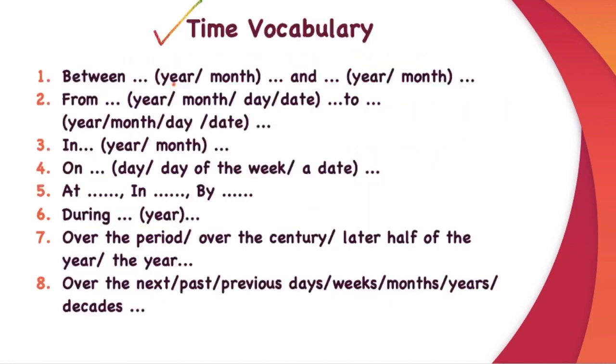Time vocabulary: between the year so and so and so and so, from so to so, in the year or month, on day or day of the week or the date, at, on, in. You should use the prepositions at, on, in and by properly. By the year so and so, or during the year so and so, over the period, over the century, later half of the year, over the next year, over the past few years, over the previous days, weeks, months, years, and decades. Use this vocabulary to sound better as far as your lexical resource is concerned.